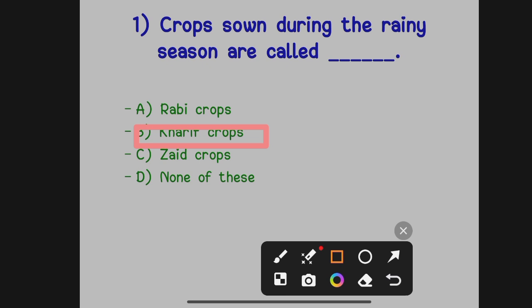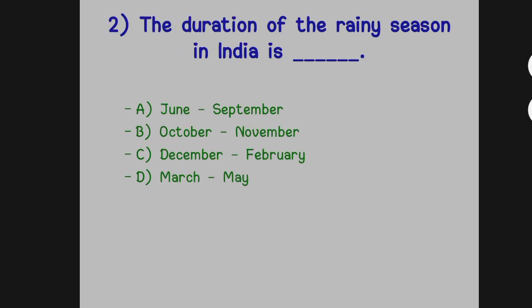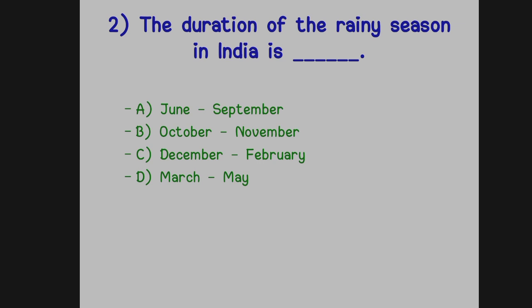The second question: the duration of the rainy season in India is dash. Option A: June to September. Option B: October–November. Option C: December–February. Option D: March to May.